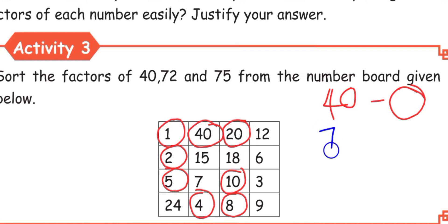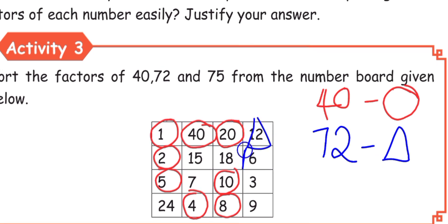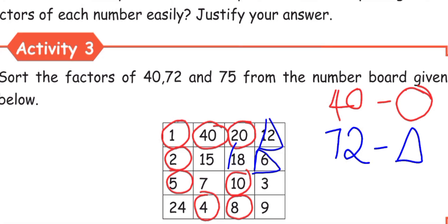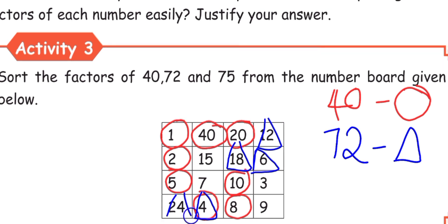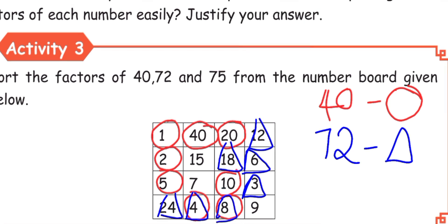For 72 factors, we draw a triangle. 12, 6's are 72. 18, 4's are 72. 24, 3's are 72. 9, 8's are 72.